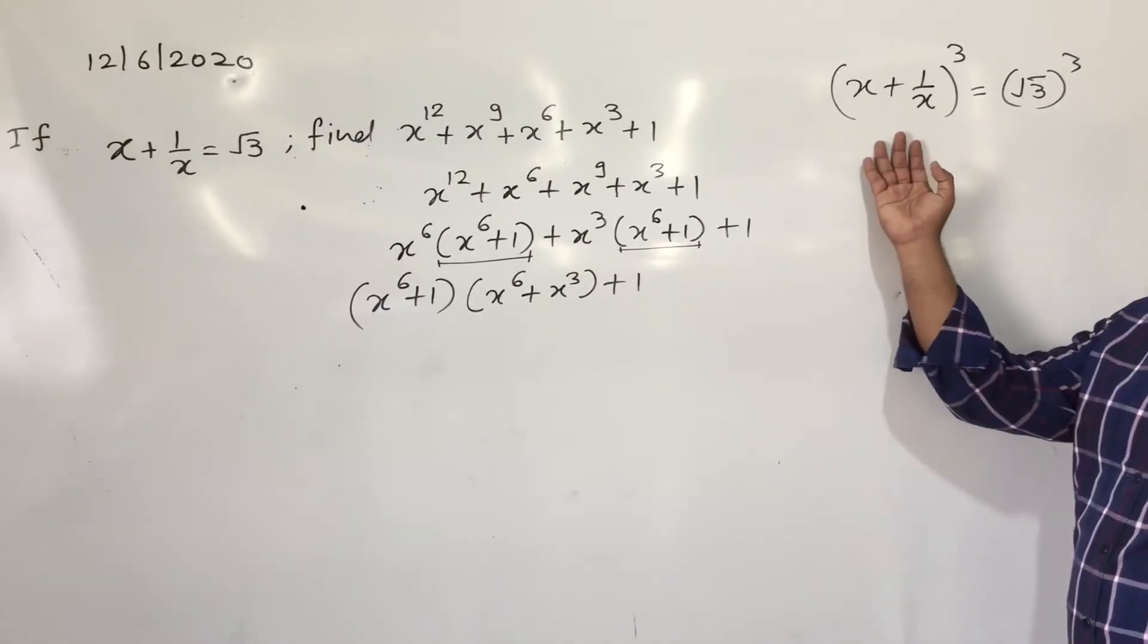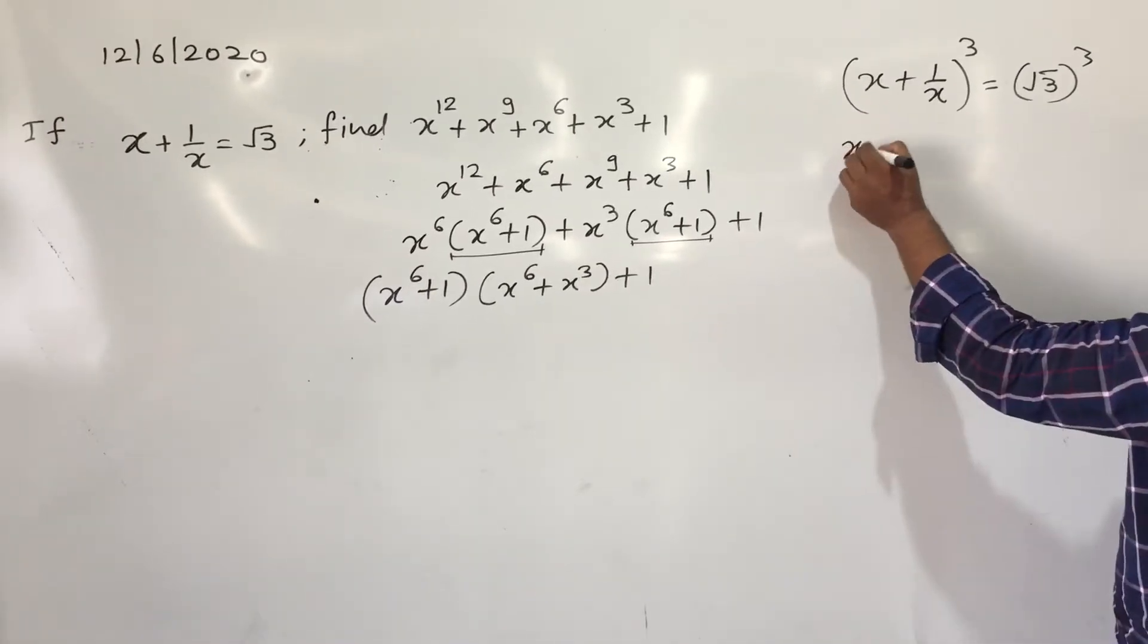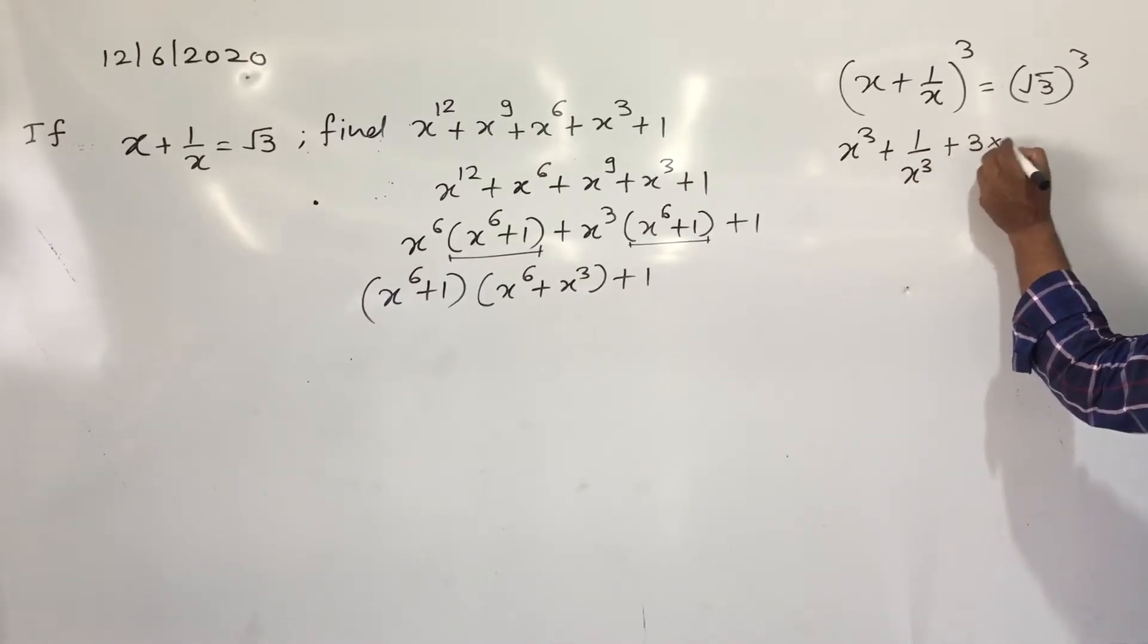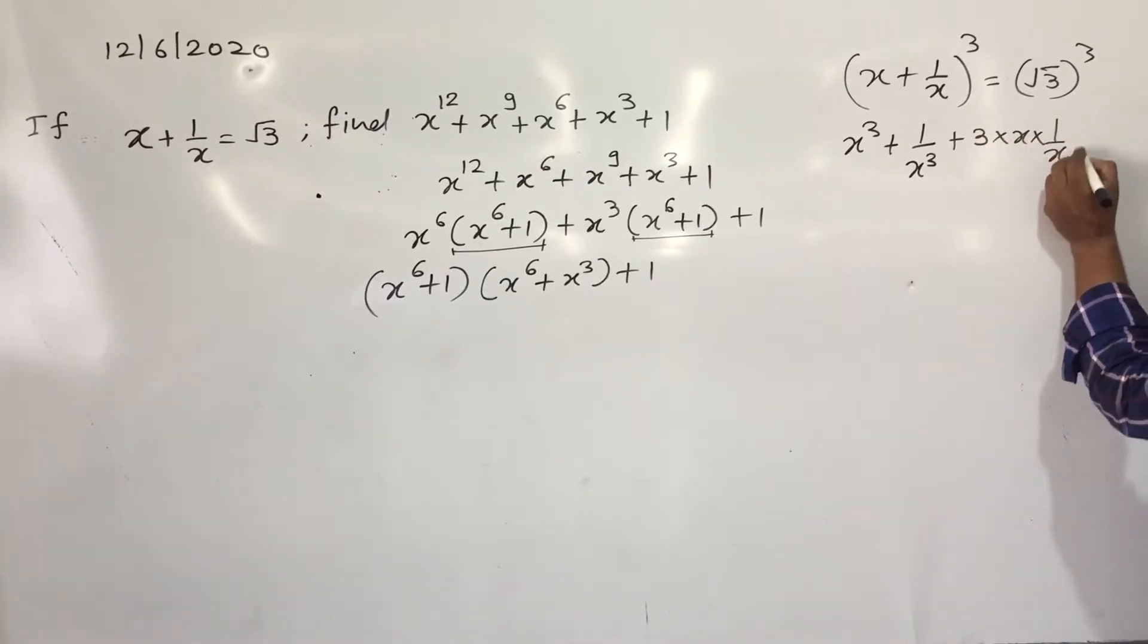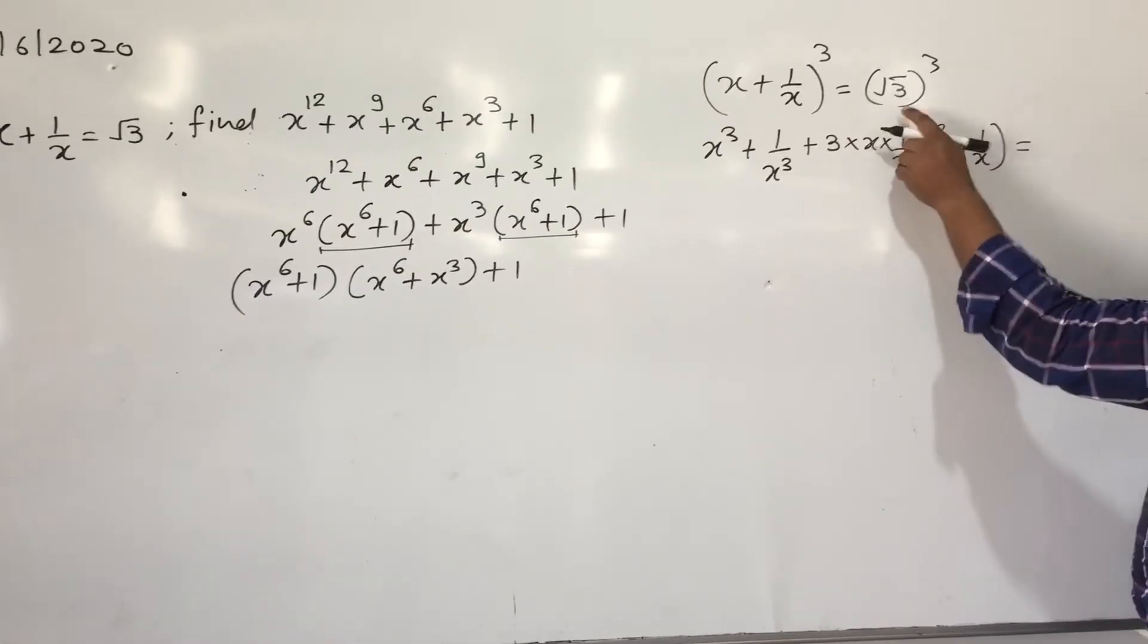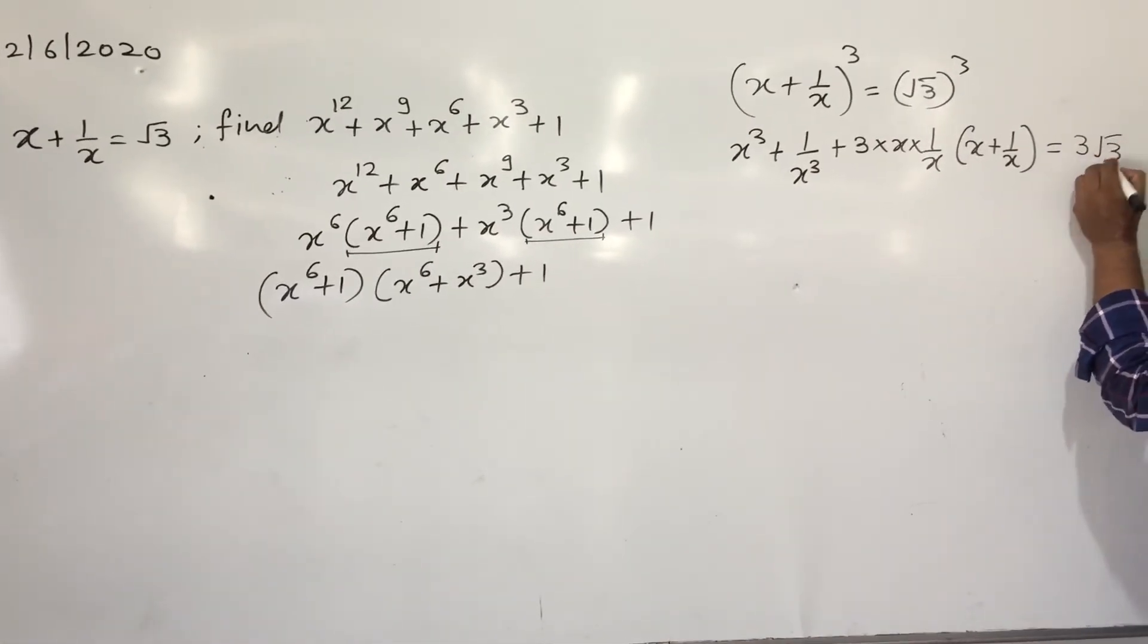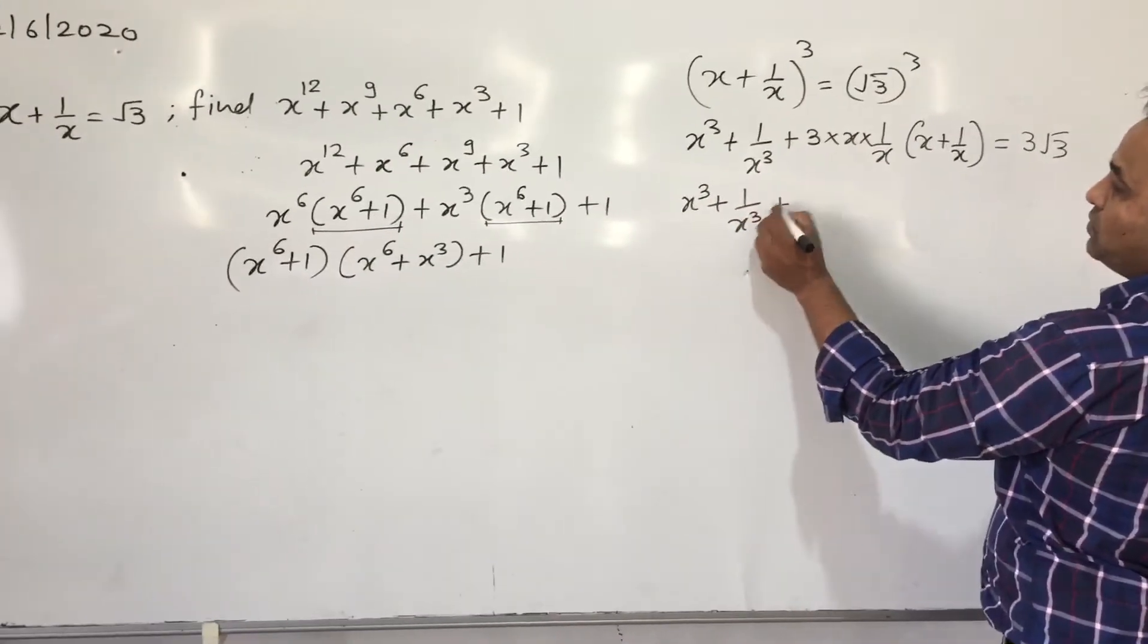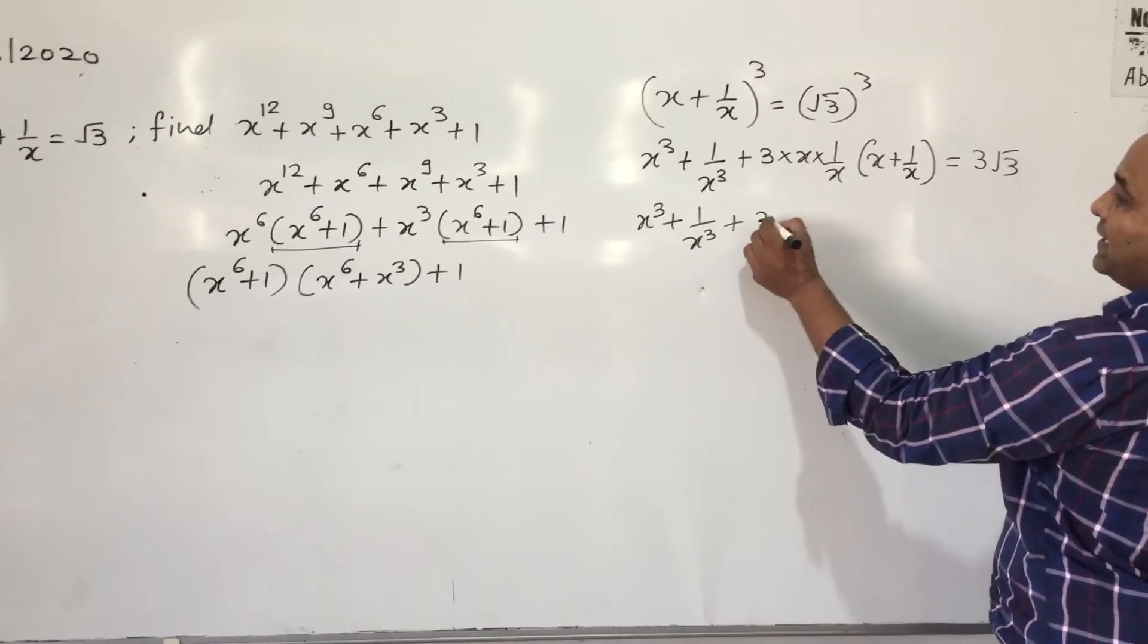Now we know the identity, (a + b)^3, that is, a^3 + b^3 + 3ab(a + b). Now this will be 3√3. x^3 + 1/x^3, this will get cancelled out, you will get 3.